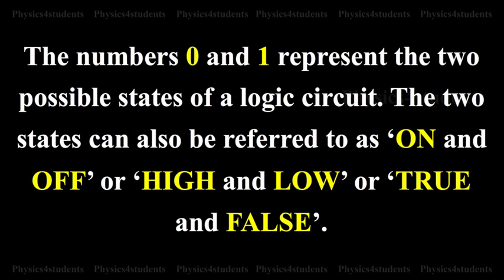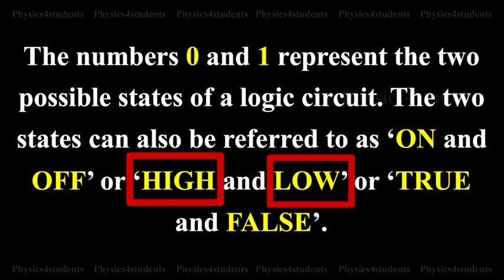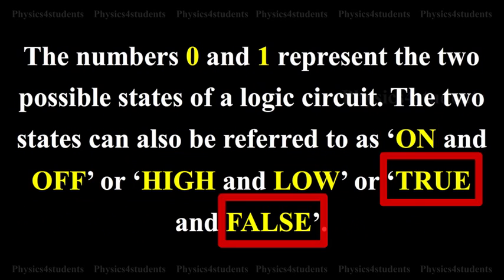The numbers 0 and 1 represent the two possible states of a logic circuit. The two states can also be referred to as on and off, or high and low, or true and false.